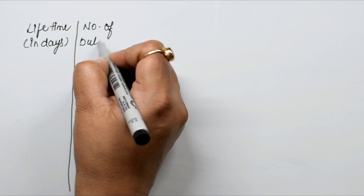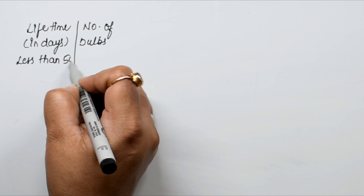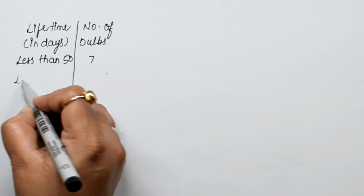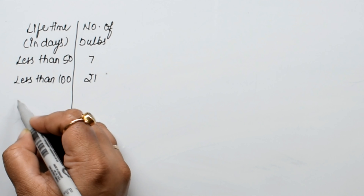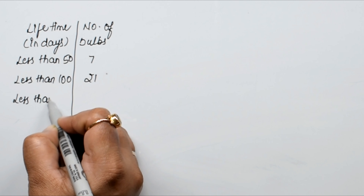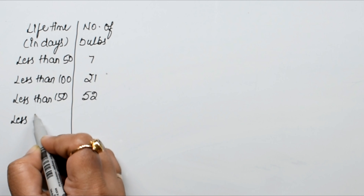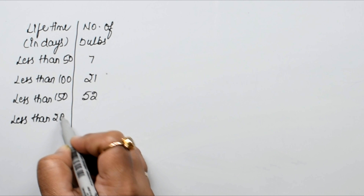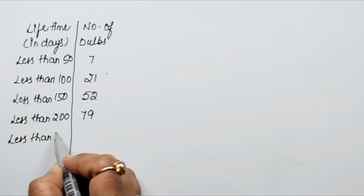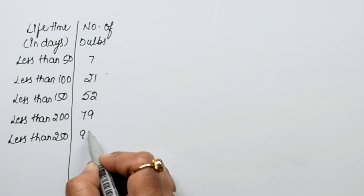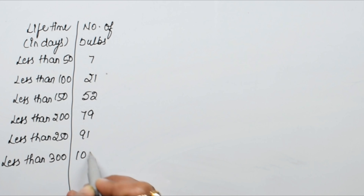We are given: less than 50 is 7 bulbs, less than 100 is 21 bulbs, less than 150 is 52 bulbs, less than 200 is 79 bulbs, less than 250 is 91 bulbs, and less than 300 is 100 bulbs.